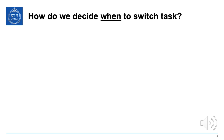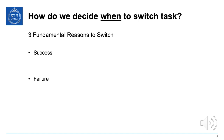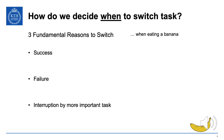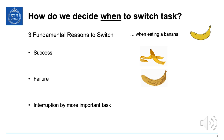How do we decide when to switch tasks? It turns out there are three fundamental reasons to switch: either you succeed with what you're doing, you fail with what you're doing, or you were interrupted by a more important task. For example, with eating a banana: succeeding means the banana is gone; failure could mean you realized it was a bad banana; and an interruption could be a fire alarm going off, at which point you'd stop eating and go for the exit.